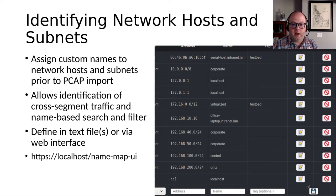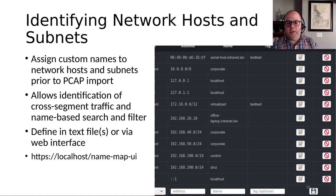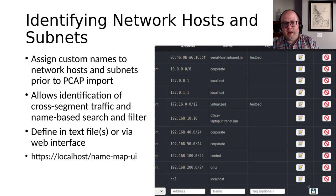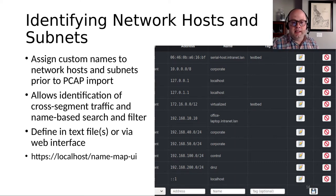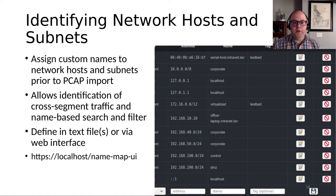As Zeek logs are processed into Malcolm's Elasticsearch instance, the log's source and destination IP and MAC address fields — zeek.orig_h (originating host), zeek.resp_h (responding host), and the MAC address fields orig_l2_addr and resp_l2_addr — are compared against the list of host addresses provided in this interface. When a match is found, a new field is added to the log: zeek.orig_hostname or zeek.resp_hostname, so your custom defined hostname mapped to those IP or MAC addresses is written alongside those logs.